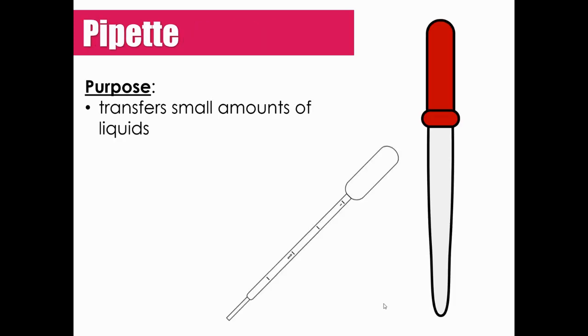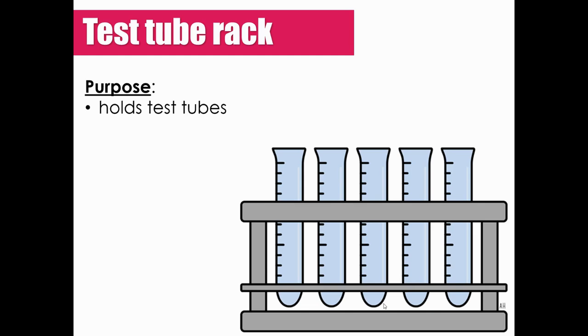We use pipettes in a ton of labs this year. So pipettes are going to help us transfer small amounts of liquids from one place to another. Most of the pipettes that we use are going to be plastic disposable pipettes. But some are glass and they come with like a little rubber stopper at the top. We might see both. But either way, pipettes are used to transfer small amounts of liquids.